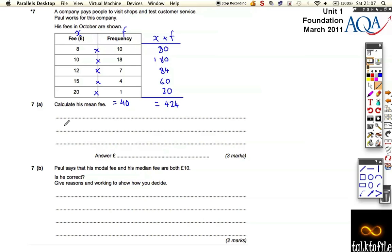So to work out his mean, you have to do the 424 divided by 40. He doesn't divide it by 5 because there's five sections. He actually did 40 different visits. So 424 divided by 40 means that he comes up with the answer 10.6 or 10 pounds 60. That was his mean fee per visit to a shop.